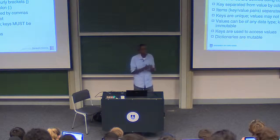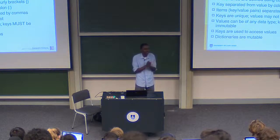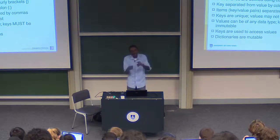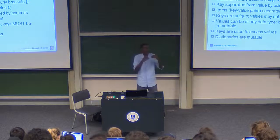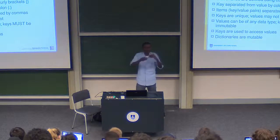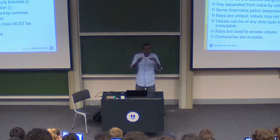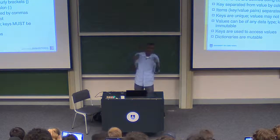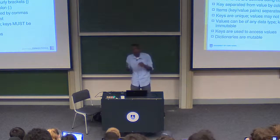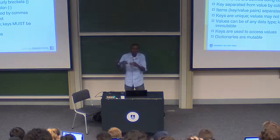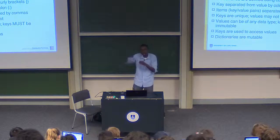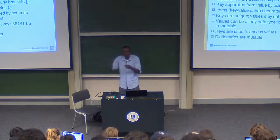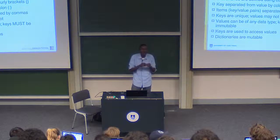Dictionaries are mutable — we can change them. This makes it possible for us, assuming we're playing around with our Vula database and we realized a name was not spelled correctly, to easily change it. Because the dictionary is mutable, we can change it without having to create a separate copy.